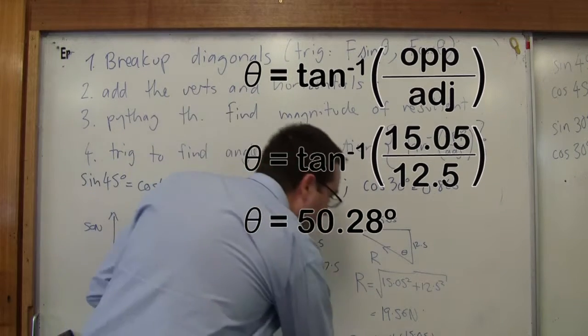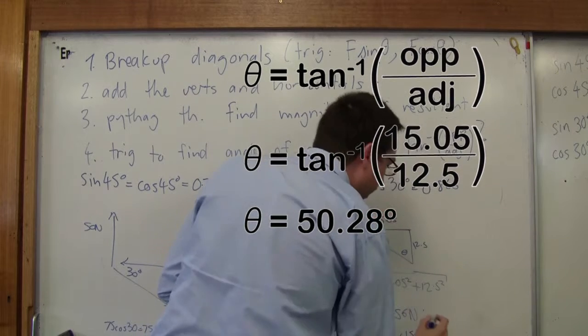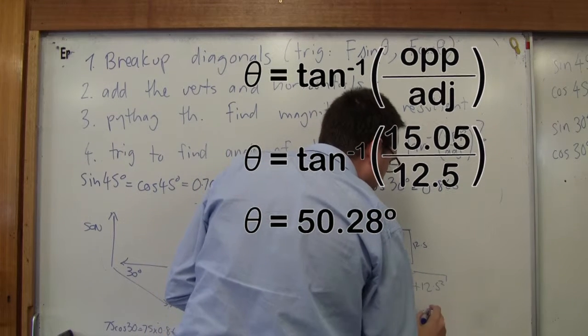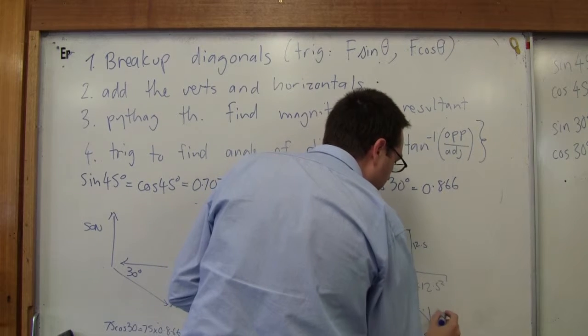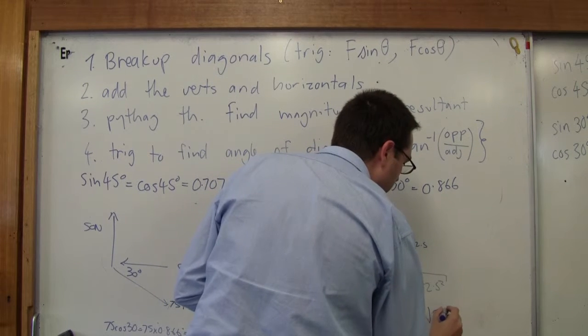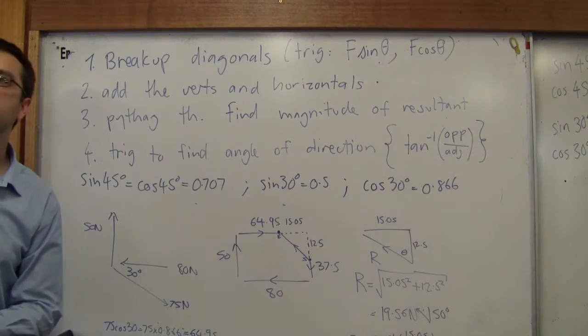50.28. 50.28. Okay, degrees. So I'm going to write here, my angle, I'm going to write my angle like this and say, 50 degrees. Does it look like it could be 50 degrees? Does that seem plausible? Yeah.